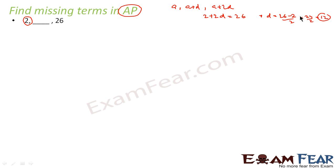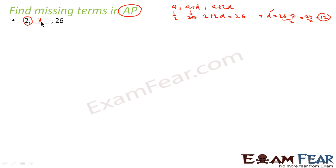So we have the value of D and the value of A. The missing term is A plus D, that is 2 plus 12, which is nothing but 14.